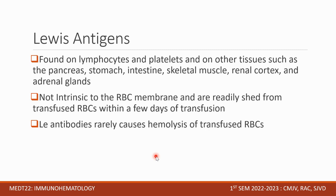Lewis antigens are found on lymphocytes and platelets, and on other tissues such as the pancreas, stomach, intestines, skeletal muscle, renal cortex, and adrenal glands. They are not intrinsic to the RBC membrane and are readily shed from transfused RBCs within a few days of transfusion. Therefore, LEA antibodies rarely cause hemolysis of transfused RBCs.